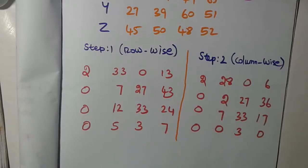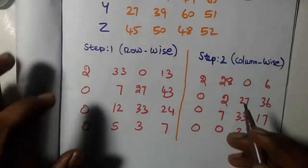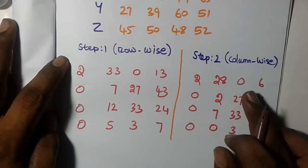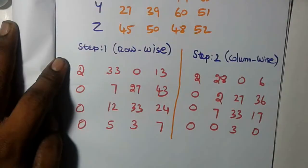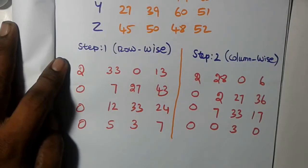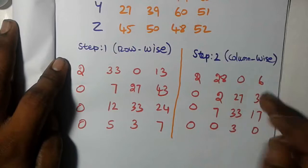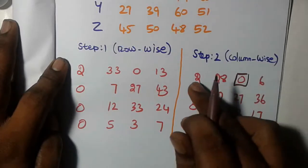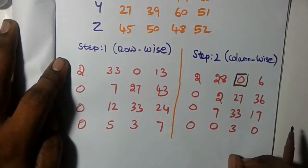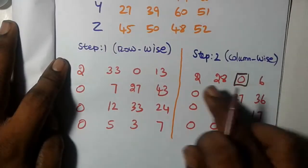Now proceed to the assignment. Look for rows and columns with a single zero and assign to them. If a row has only one zero, assign it. After assigning, cut that row and the corresponding column. Then move to the next row and repeat the process.